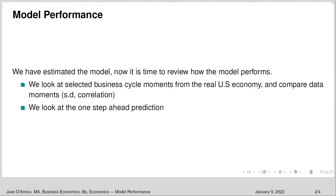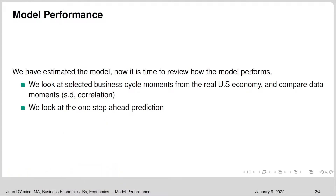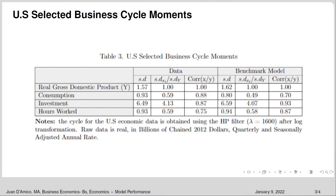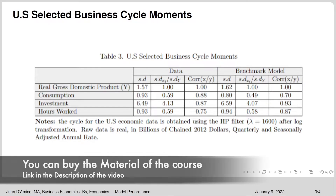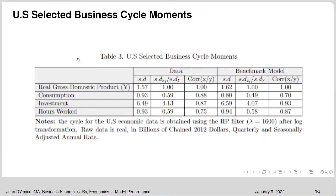We're going to look at selected business cycle moments from the real US economy and compare the data moments. What we are going to be looking at is the standard deviation and the correlation of the real data versus the standard deviation and correlations of the benchmark RBC model. Finally, we're going to look at the one-step-ahead prediction. The table I have included is from my paper, and the way you build it is with the data on the left-hand side and the benchmark RBC model on the right-hand side.